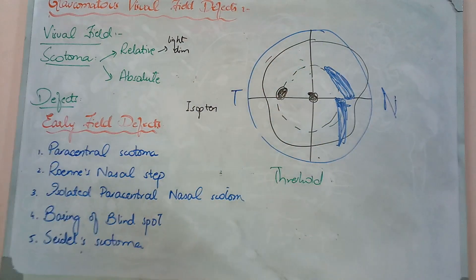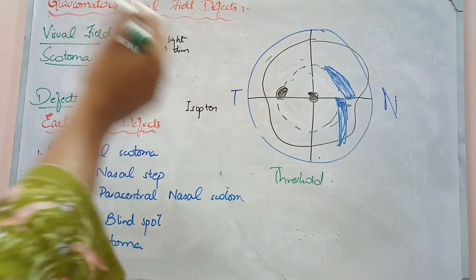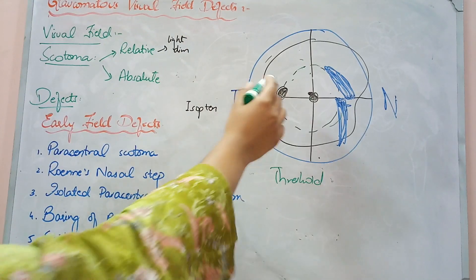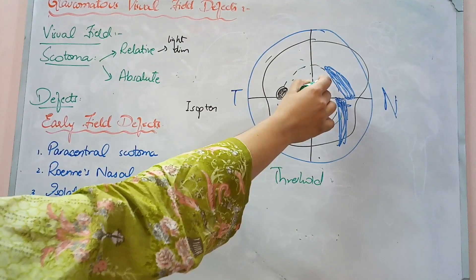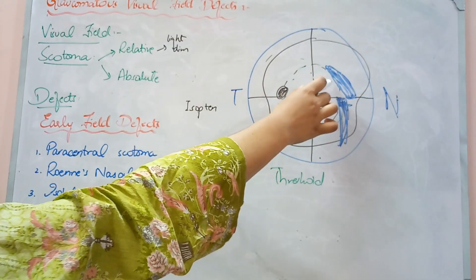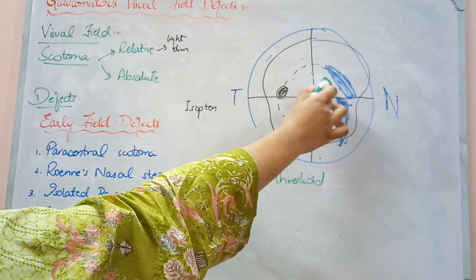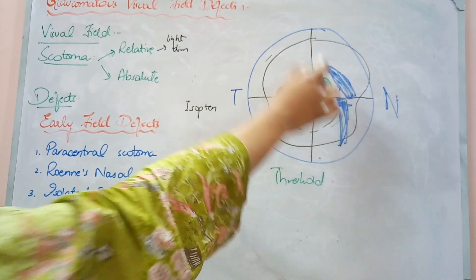In isolated paracentral nasal scotoma, it is just that it is within 30 degrees of the fixation point and on your nasal side. That's it.